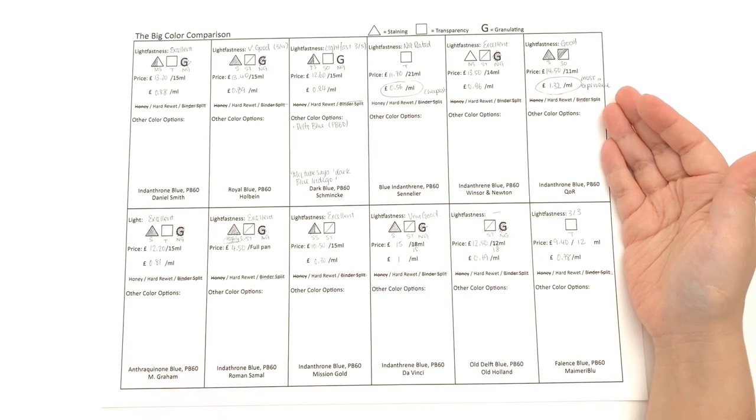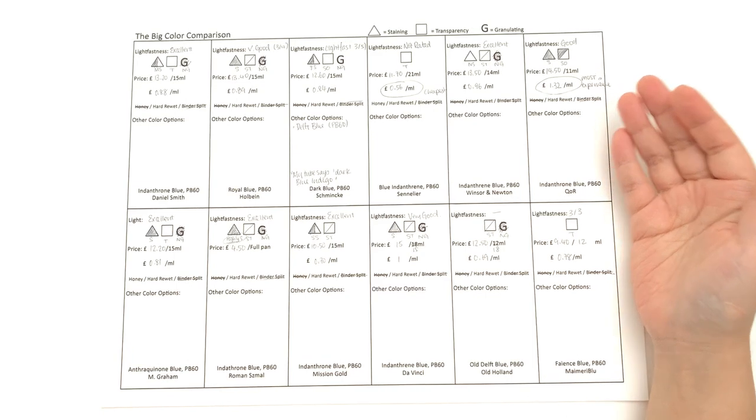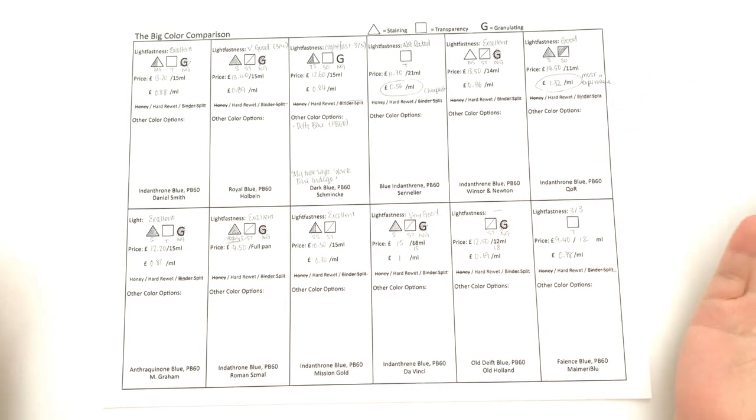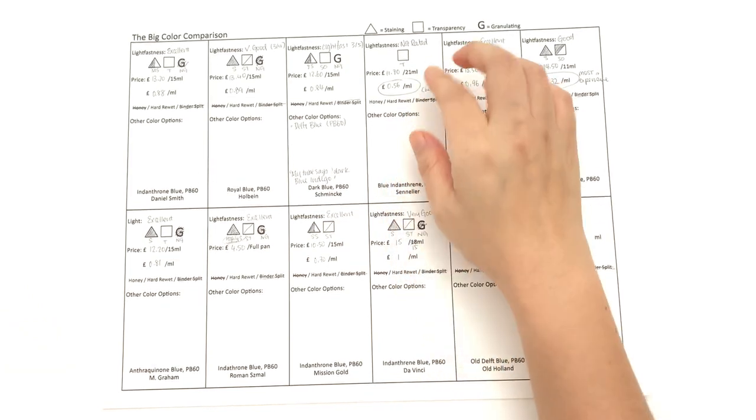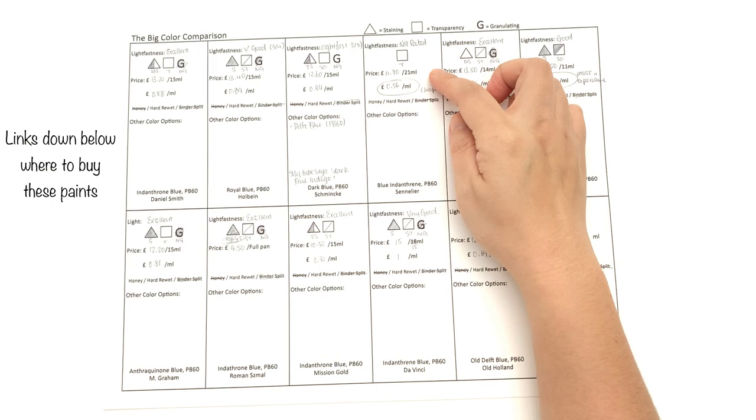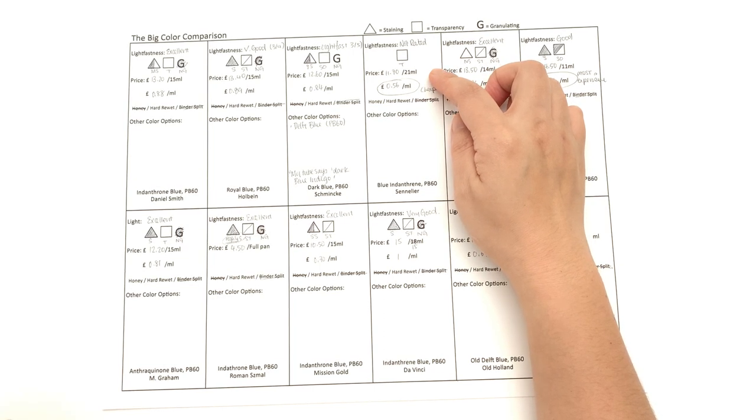The cheapest one is Sennelier, with it being 56 pence per milliliter. However, that is for the 21 milliliter tube price. If you go for the smaller tube, then it's going to work out a little bit more expensive, but if you really like this color you could go for the 21 milliliter tube.